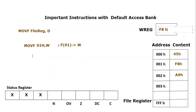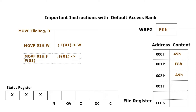Now let's see another option: if we write MOVF 01h, F — we are moving the file register content at address 01h, which is FFh, and we are moving it to the file register itself. So the data is taken from file register at 01h and moved back to 01h. What will be the changes after execution? There will be no change at all — FFh will simply be copied and pasted back to the same location.